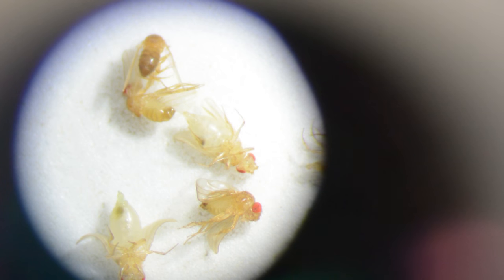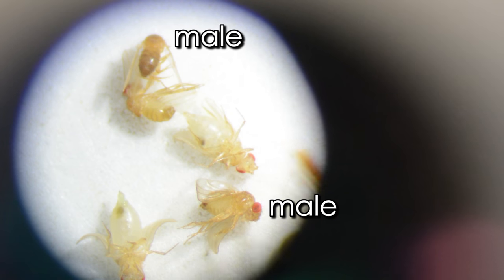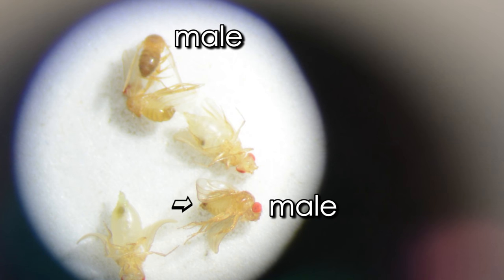What we're looking at now are adult fruit flies. We can start by showing the different genders — males are generally, but not always, smaller. You can often tell because males have a darker patch, whereas females tend to be a little bit lighter, but not always.